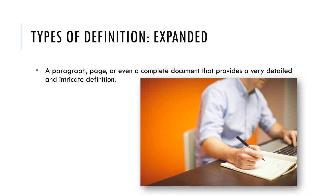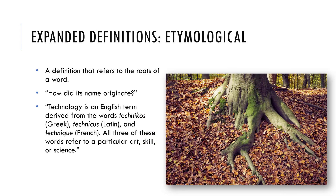The third category of definition is called expanded. We won't do much of that in this class, but it is important to understand the details. An expanded definition can be a paragraph, a page, or even a complete document that provides a detailed and intricate definition of something. One kind of expanded definition is etymological — a definition that refers to the roots of a word, answering the question: how did its name originate?